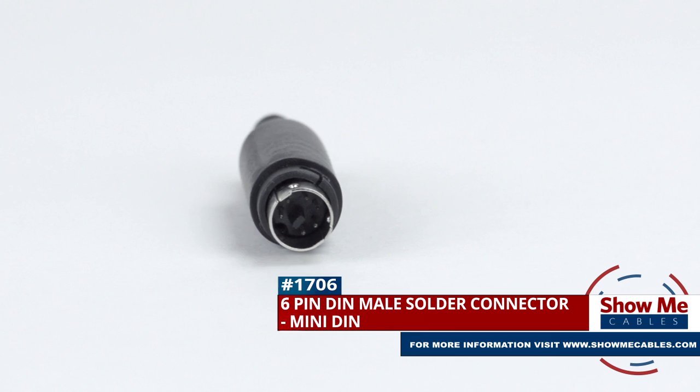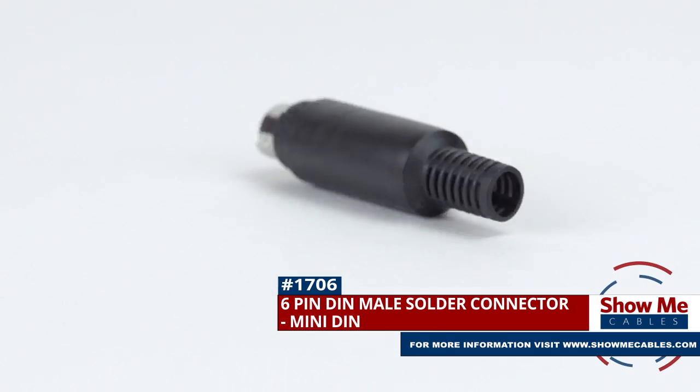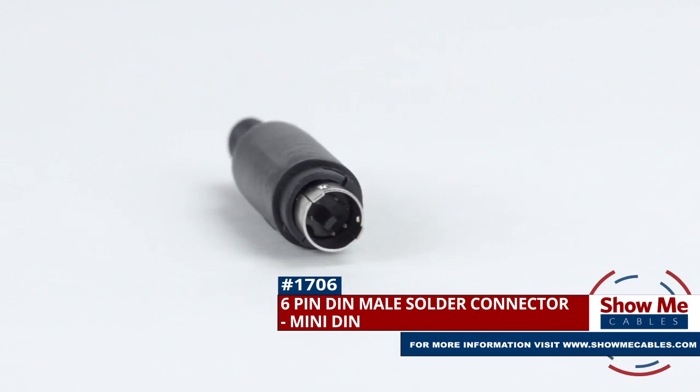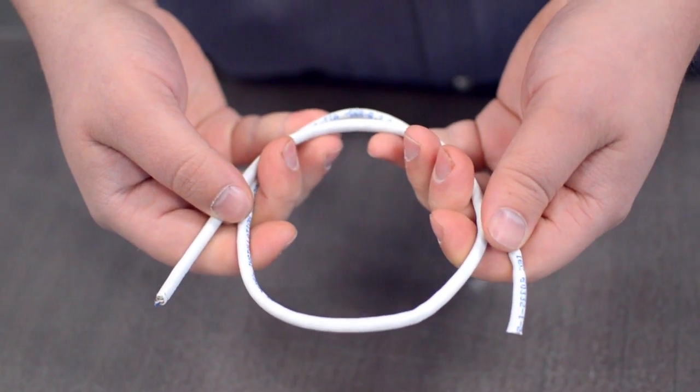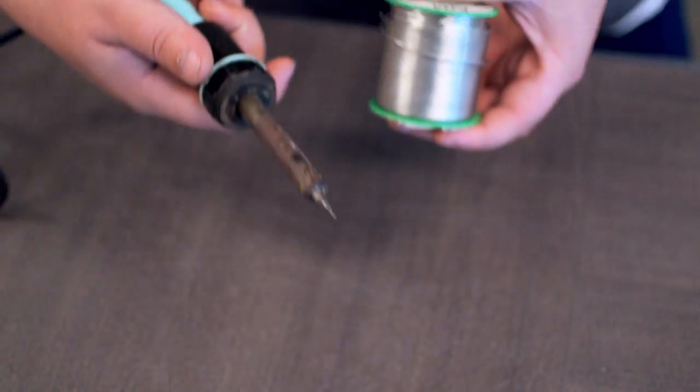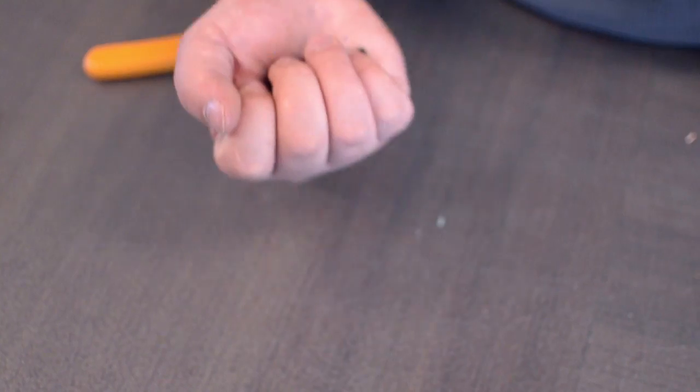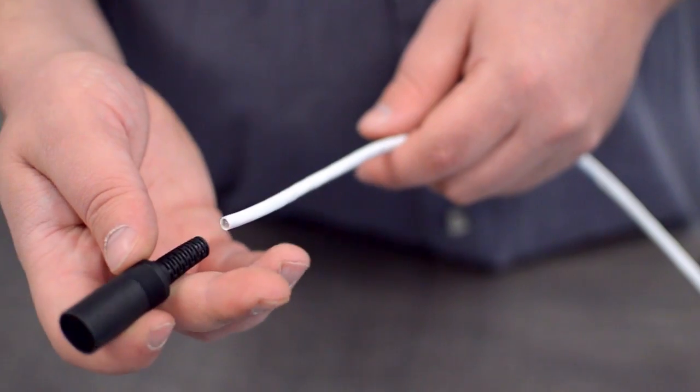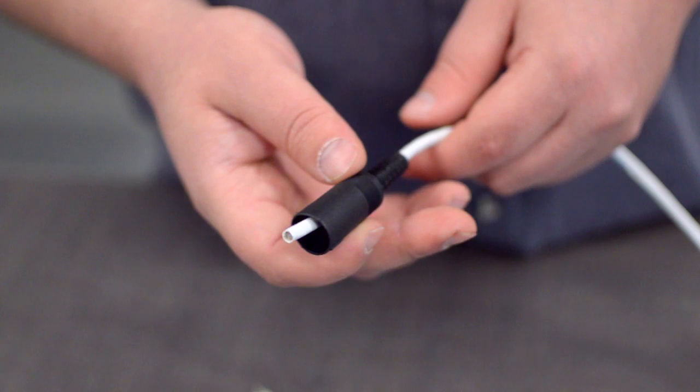This is the 6-pin Mini-DIN male solder connector. To install, you will need the following items: low voltage cable, wire strippers, solder and soldering iron, and the DIN connector. Start by inserting the plastic boot over the jacket.